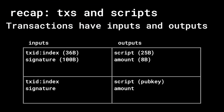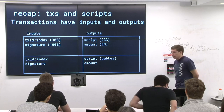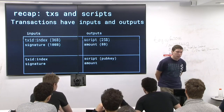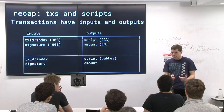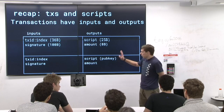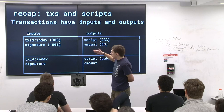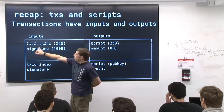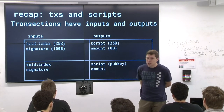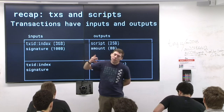Recap of transactions and scripts: in practice, 99% of the scripts are just checking a public key signature. Basically, you send to a public key hash; when you spend from it, you reveal the public key, check that the hash matches, and check a signature. Transactions have inputs and outputs. A transaction ID and index point to a previous transaction — the transaction ID is 32 bytes, the index is encoded as a four-byte 32-bit integer, which is kind of overkill since the most outputs there's ever been is around 1,000.